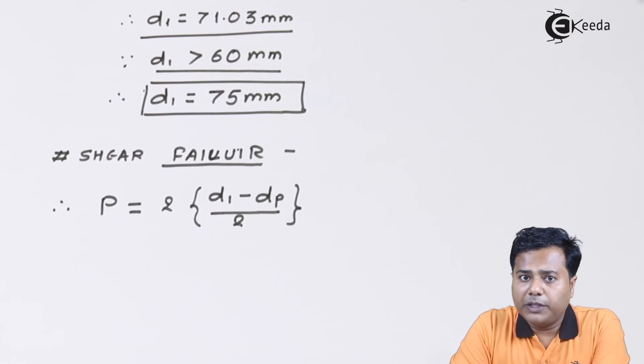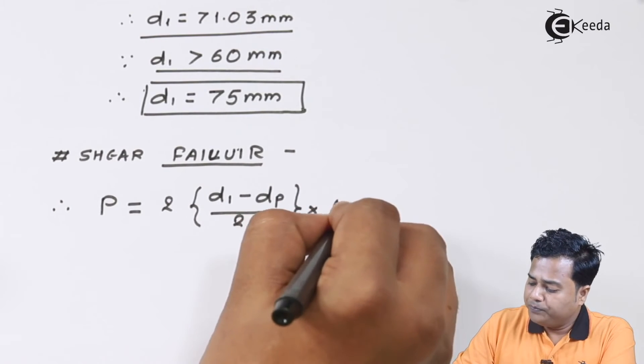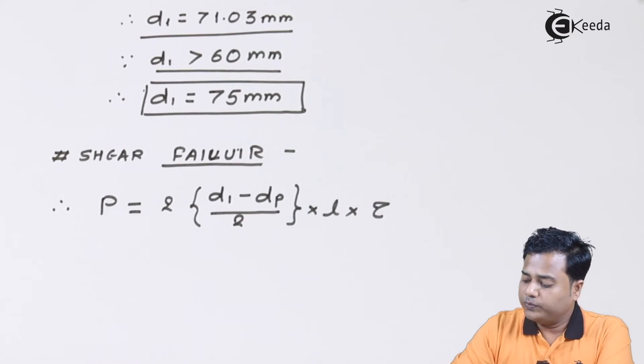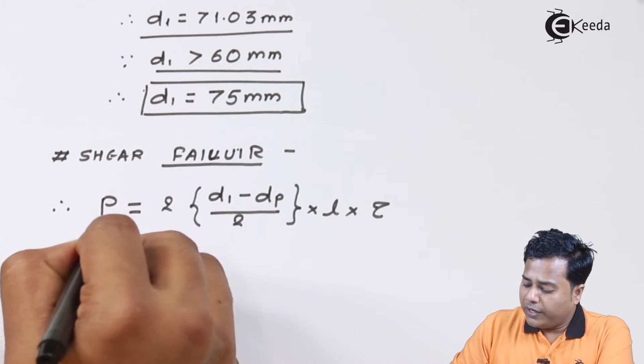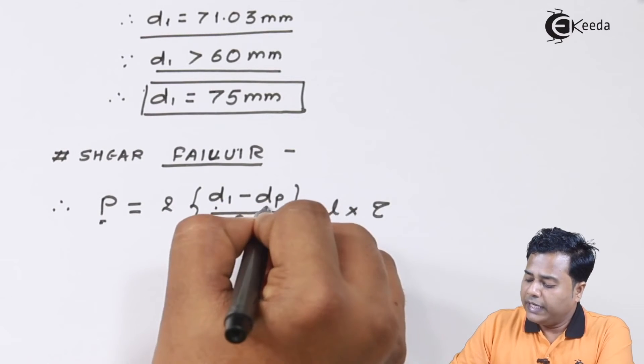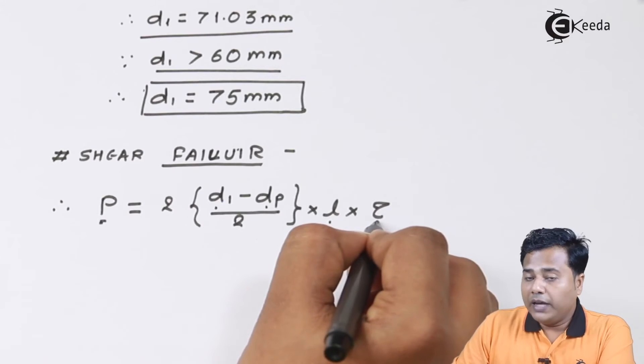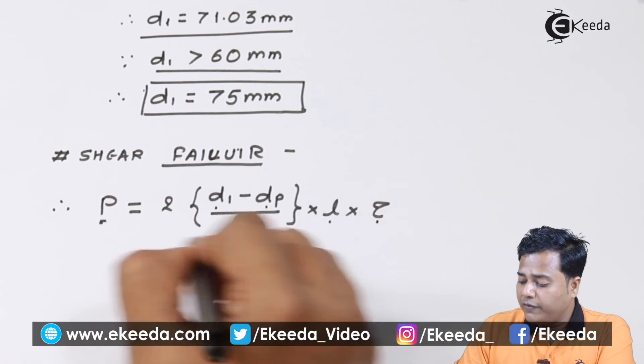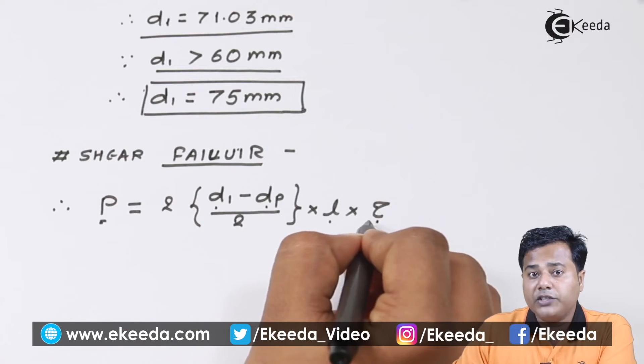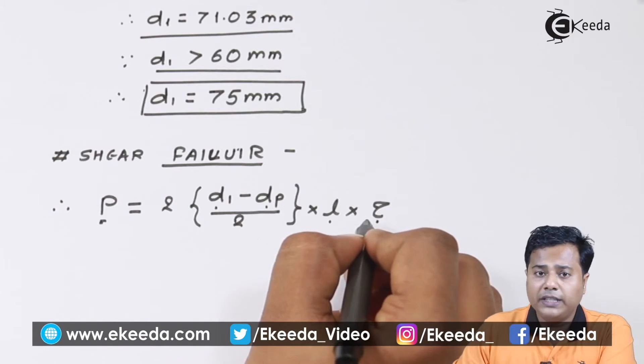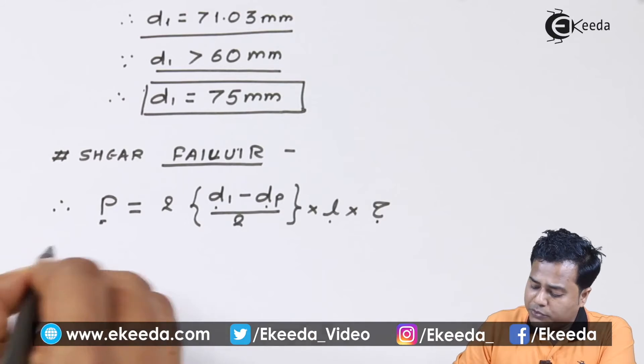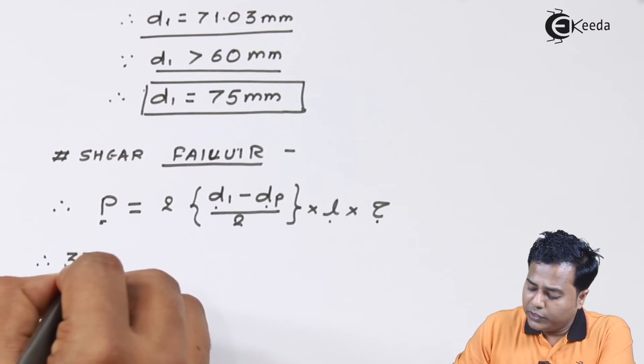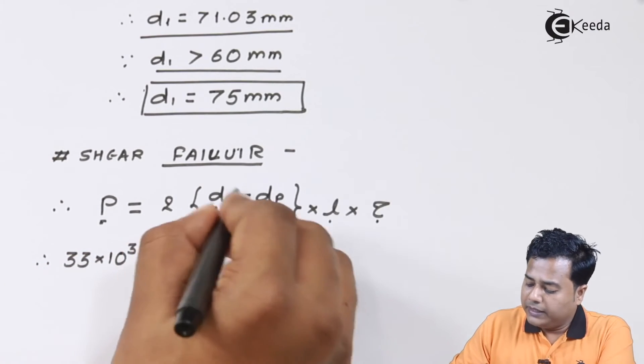We are considering twice because it is going to fail under double shear. This is the average area which we are going to concern. We have got the value of P, d₁, dp, L, and the safe value of τ. Let us see whether the value of tau that we are going to get is safe or not.